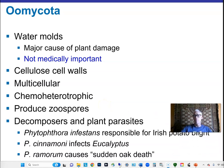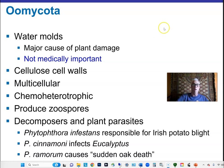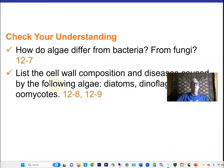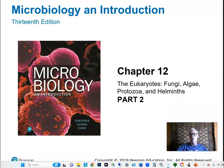Water molds are extremely prevalent and important blights of crop plants, but there are no human diseases associated with them. So we'll cut off here and start part two, where we'll look at protozoa and helminths — you'll very much enjoy helminths.